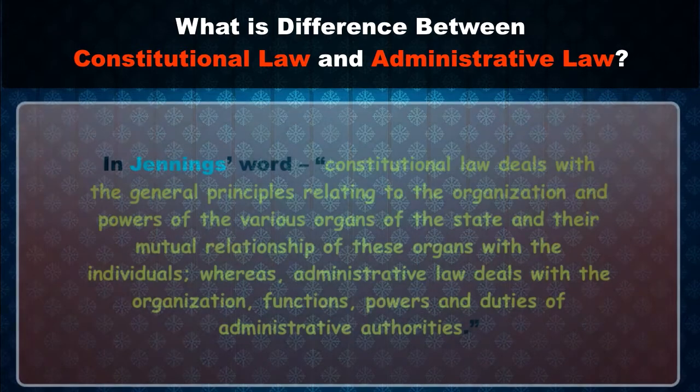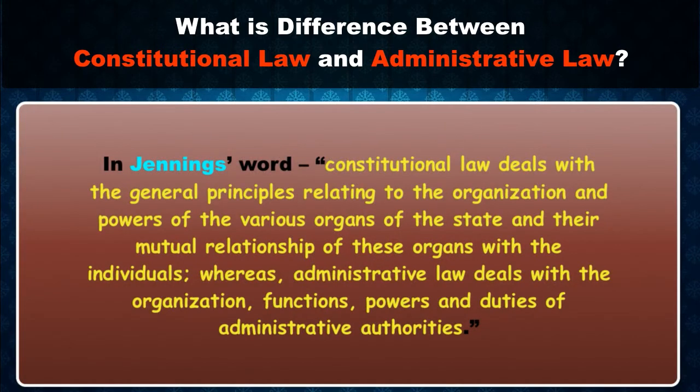In Jennings' words, constitutional law deals with the general principles relating to the organization and powers of the various organs of the state and their mutual relationship with individuals, whereas administrative law deals with the organization, functions, powers, and duties of administrative authorities.